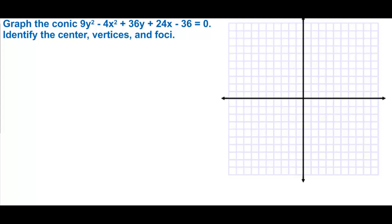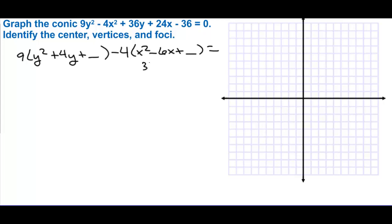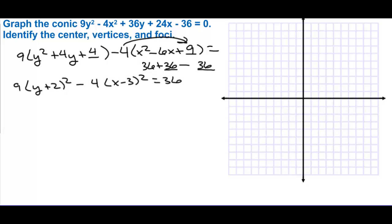Graph the conic and identify the center, vertices, and focal points. We complete the square by factoring 9 out of the y terms and negative 4 out of the x terms. Then 4 divided by 2 is 2, 2 squared is 4, adding 36 to one side. And 6 divided by 2 is 3, 3 squared is 9, so we minus 36 (because negative 4 times 9 is what we actually did). We get 9(y plus 2) squared minus 4(x minus 3) squared equals 36.